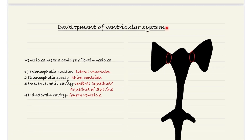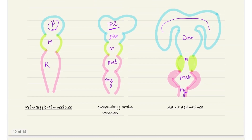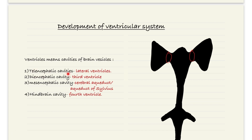The last topic is the development of the ventricular system of the brain. Ventricles are the cavities within the brain substance, filled with cerebrospinal fluid. The telencephalon cavity forms the two lateral ventricles. The diencephalon cavity forms the third ventricle. The mesencephalon cavity converts into a tube known as the cerebral aqueduct, or the aqueduct of Sylvius. And the hindbrain cavity forms the fourth ventricle.